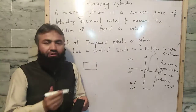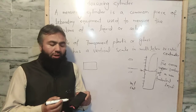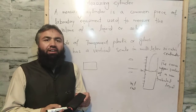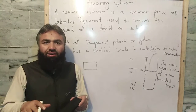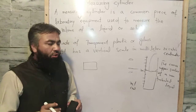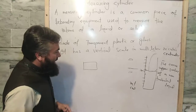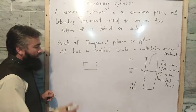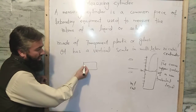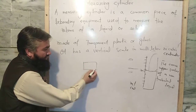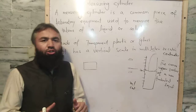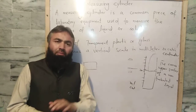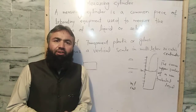We can find the volume of a regular solid object by multiplying length, width, and height. But for irregular shaped bodies, we cannot find the volume by simple formulas.